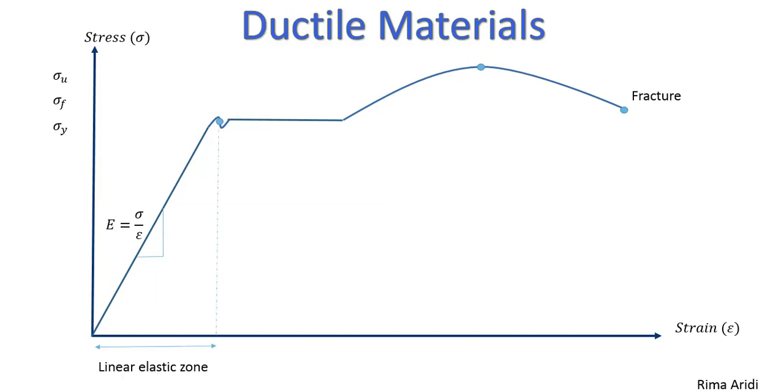Now, before yielding point, it's called elastic zone. The material here regains its initial shape. We can apply Hooke's law. Hooke's law says that sigma equals E times epsilon.